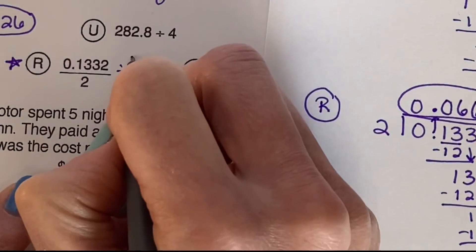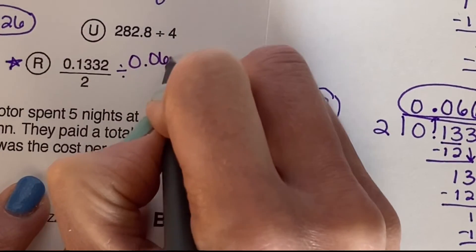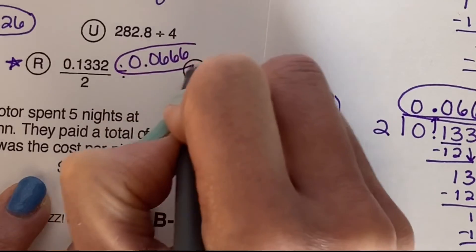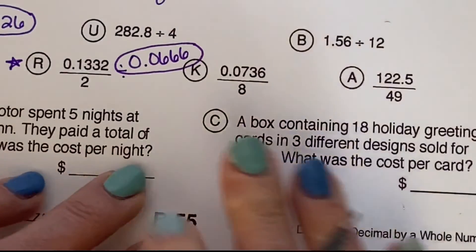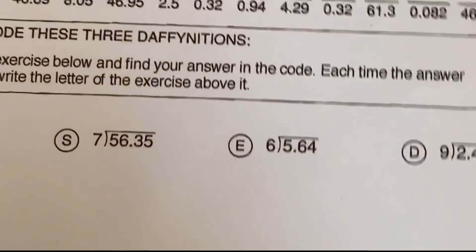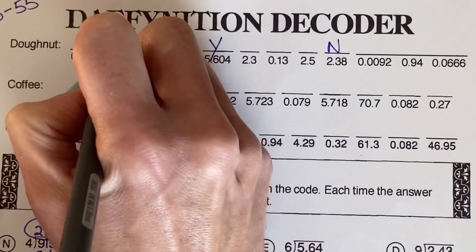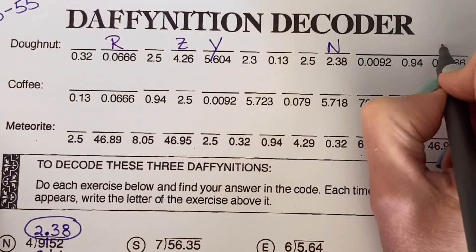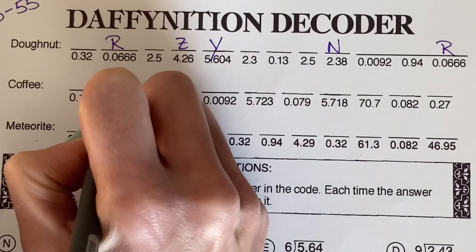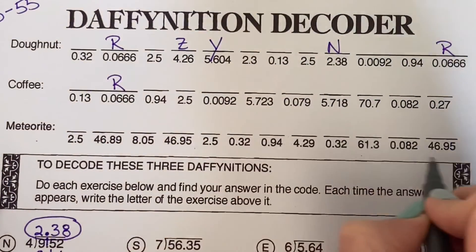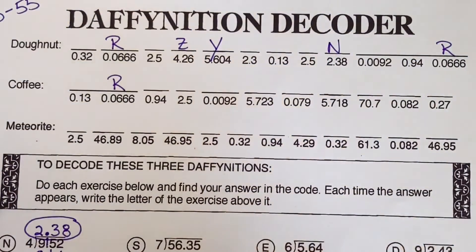Well, that's kind of an interesting one. I write it here. 0.0666. Let's find where R goes. Here's an R. Here's an R. R. And I think that's it for R's.